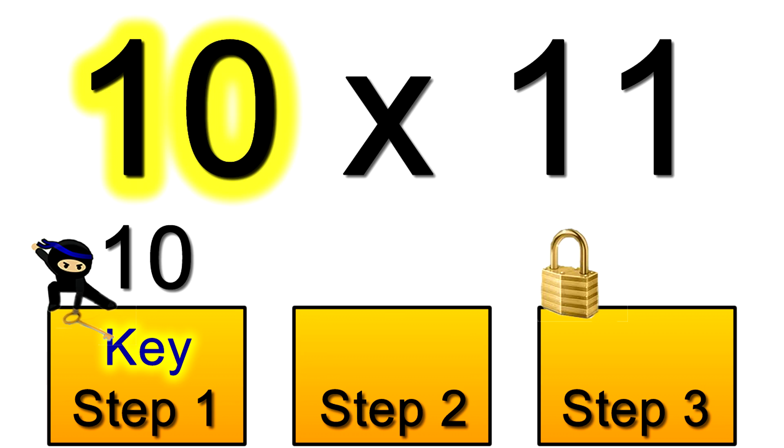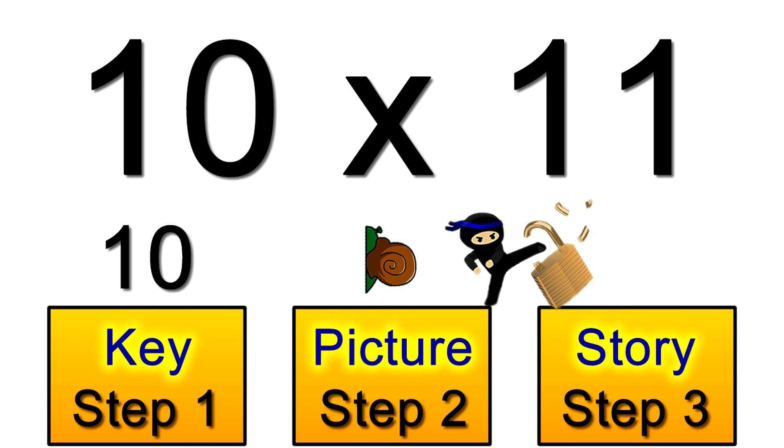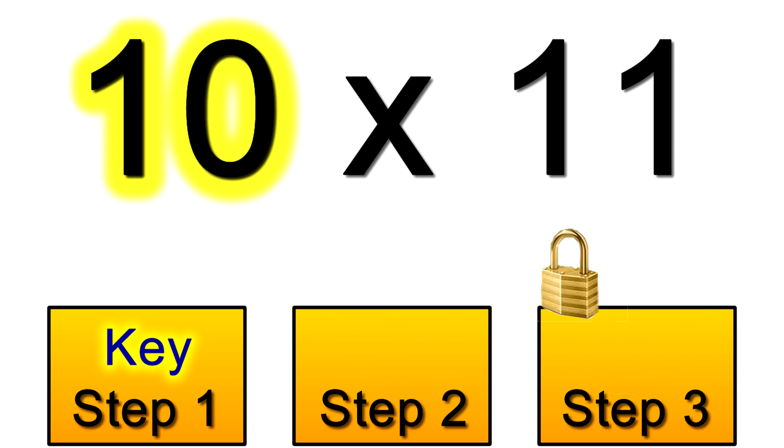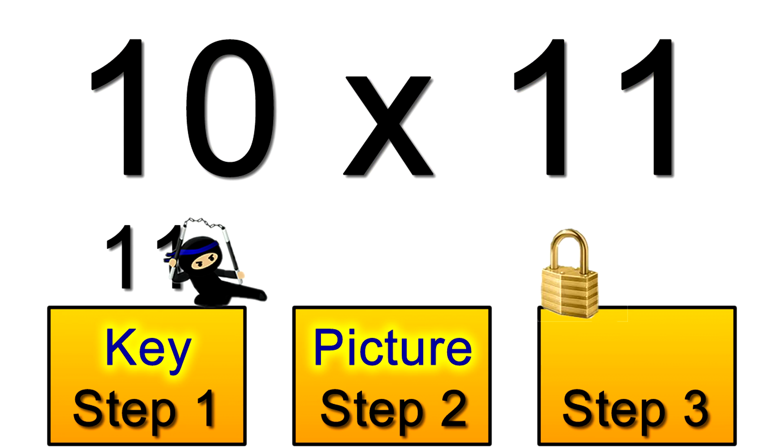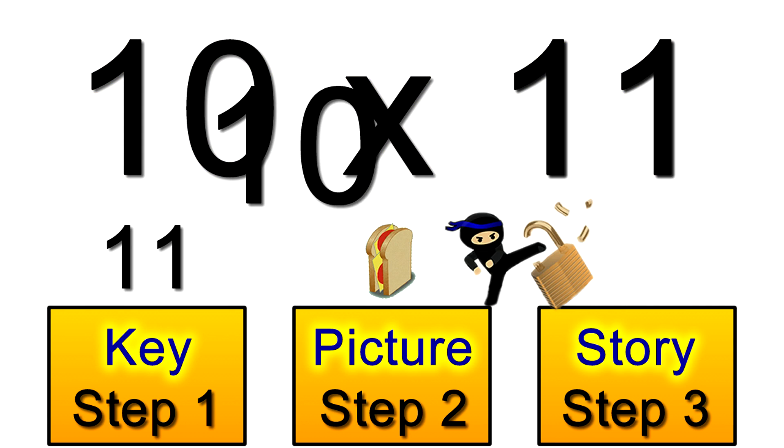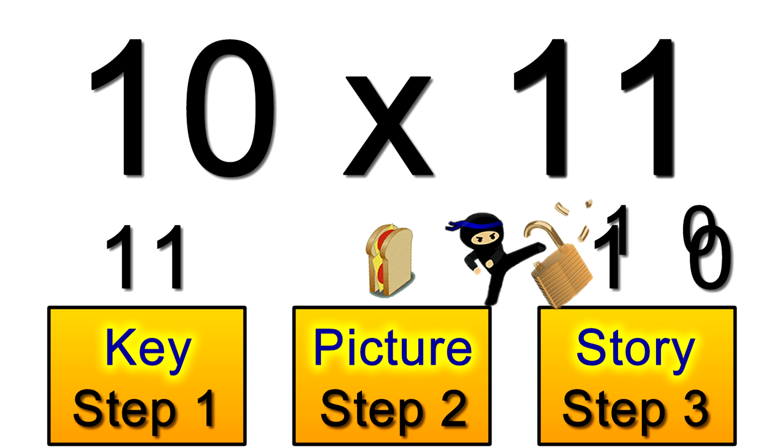Would you find it faster to do that snail story and put a zero on the end of 11 to get 110? Or would it be faster to make a sandwich with one and zero on those two slices and then adding them together to put another one in the filling? You see you still get to 110 but the snail was much faster.